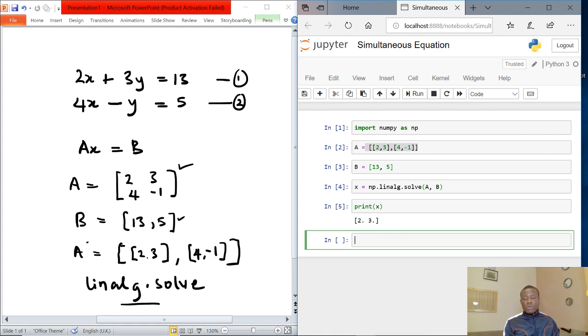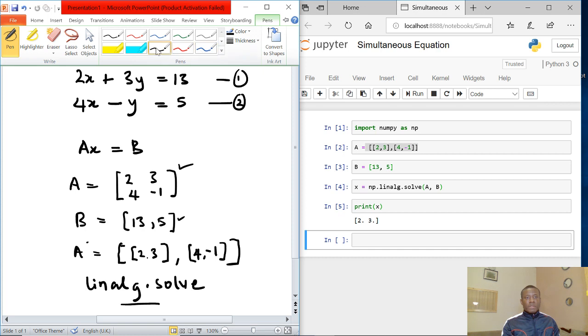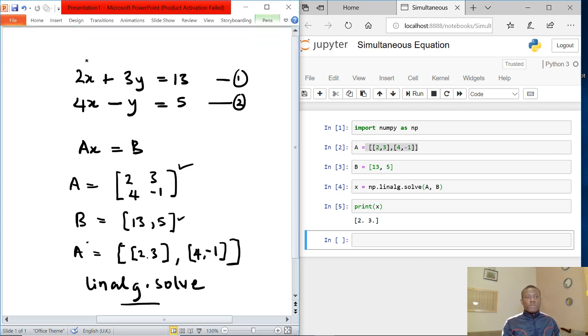So it tells us x is equal to 2 and 3. Let's substitute to see if that is actually true. If we use 2 here, we have 2 times 2 is 4, plus 3 times 3 is 9, equals 13. So it actually checks out. This is how to solve simultaneous equations in Python.